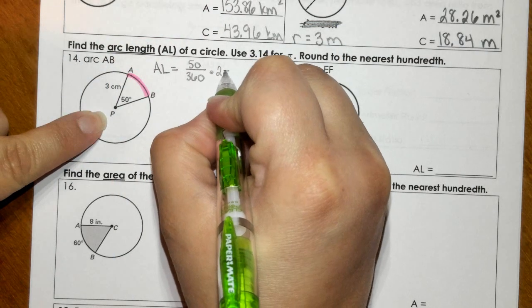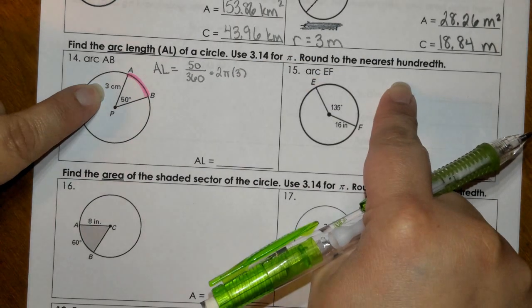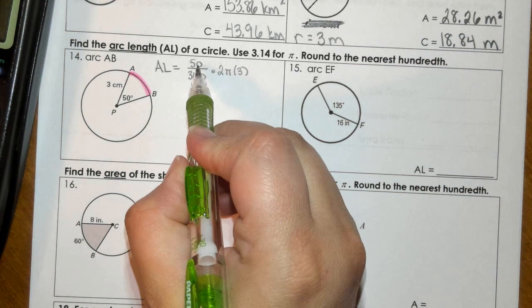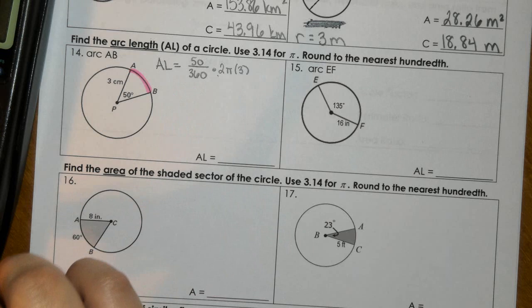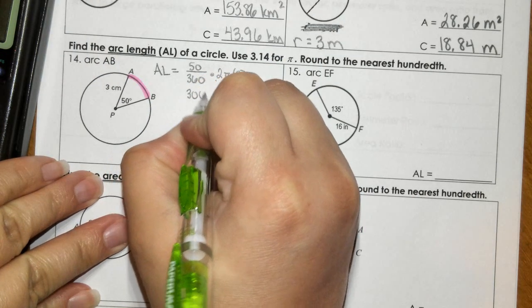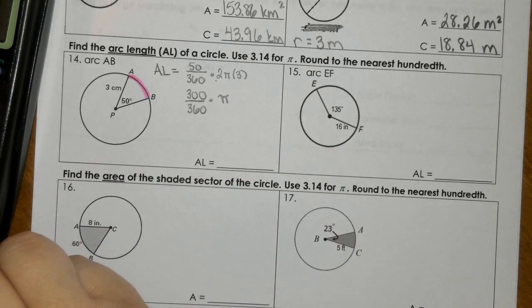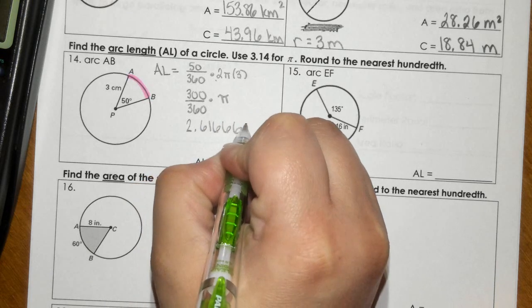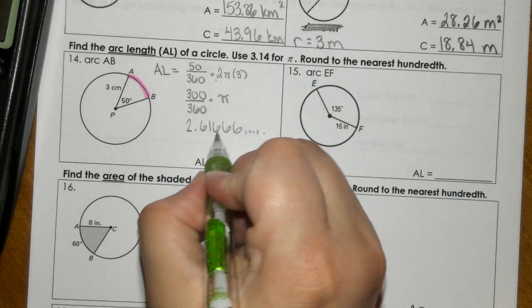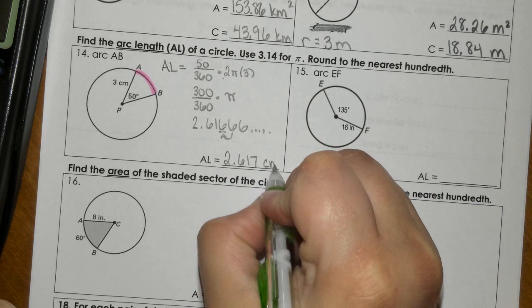That gives you this measurement here. So 2πr, where r is 3. It says we're using 3.14 for pi, and we are rounding to the nearest hundredth. For me, I'm just going to take 50 times 2 times 3, and this gives me 300 over 360 times π. So I'm going to say 300 divided by 360 gives me this decimal times 3.14. It gives me 2.61666 repeating. Round to the nearest hundredth, so I'm going to round up to 2.617, and this is centimeters.